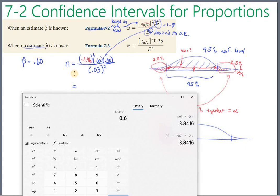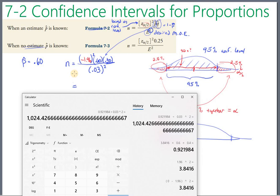So that's about 3.8416, and then times 0.6 times 0.4. Now we're at 0.921984, and we want to divide that by 0.03 squared. So finally, here what I've got is 1024 people.